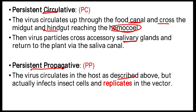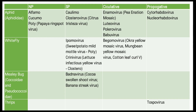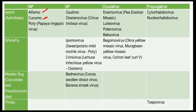A comparison of all four types is given here — you can take a screenshot and study it. Now let's look at examples. The insect aphid transmits in all four modes, but the examples are different for each. Alfamo (alfalfa mosaic virus) and cucumo (cucumber mosaic virus) transmit in non-persistent manner. Caulimo (cauliflower mosaic virus) transmits in semi-persistent manner. These examples are very important and many multiple choice questions are based on them.